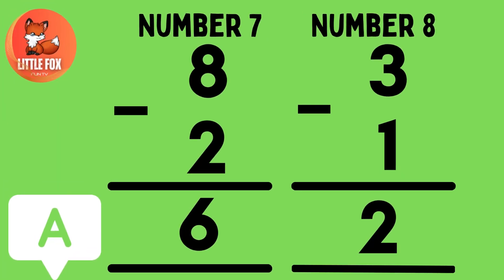Number 7. 8 minus 2 is equals to 6. Number 8. 3 minus 1 is equals to 2.